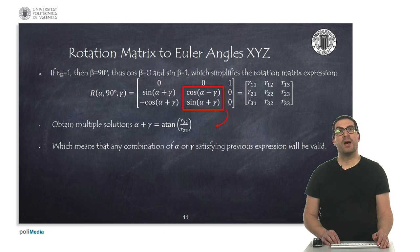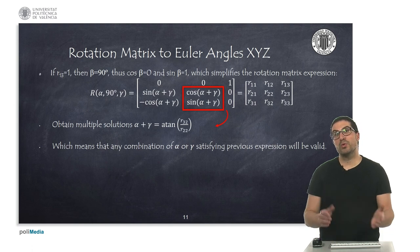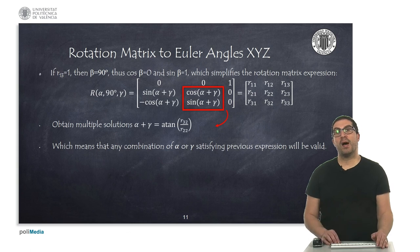that alpha and gamma both contribute to the same direction, or contribute to the same rotation in this case. So we can obtain multiple combinations of alpha and gamma to represent the same orientation.